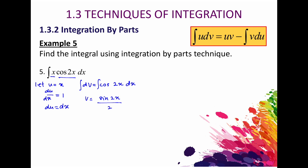Putting it into the formula, the integral of x cos 2x dx equals x times sin 2x over 2, minus 1 over 2 times the integral of sin 2x dx. Rearranging the front part, we have 1 over 2 times x sin 2x, then we integrate 1 over 2 sin 2x.